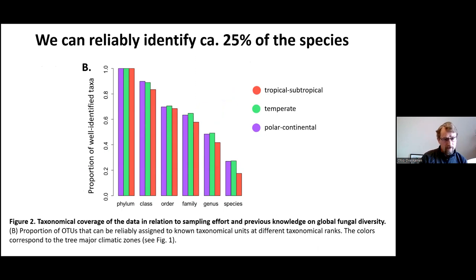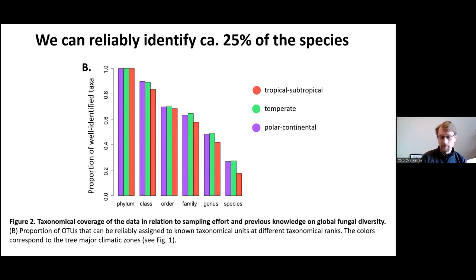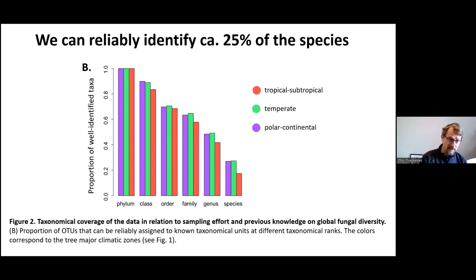It was possible to reliably identify about 25 percent of all species in our sample to the species level — giving them a trustworthy scientific name — and about 75 percent of species reliably to the order level. It was especially difficult to identify species from the tropical and subtropical samples, reflecting the partiality of reference databases from those areas.